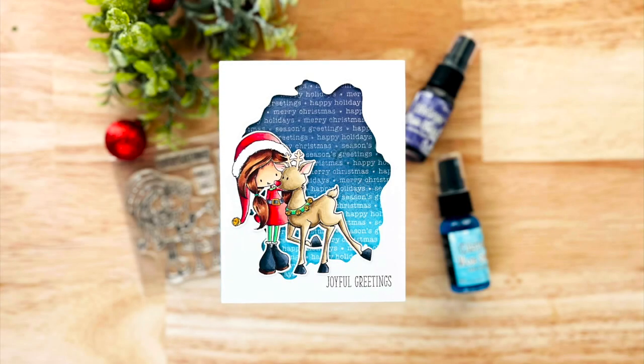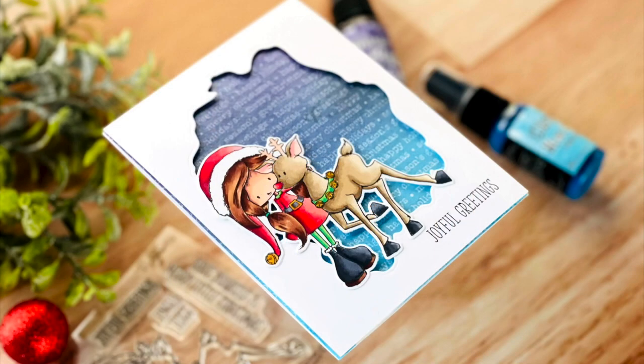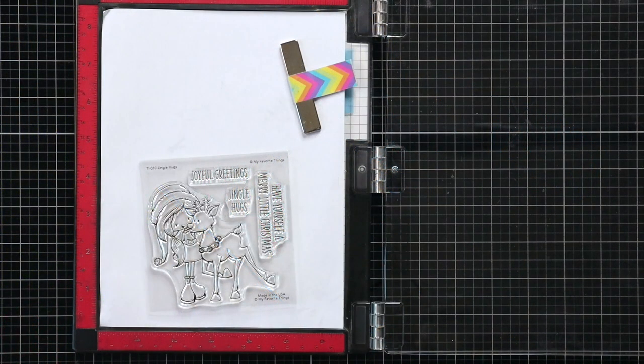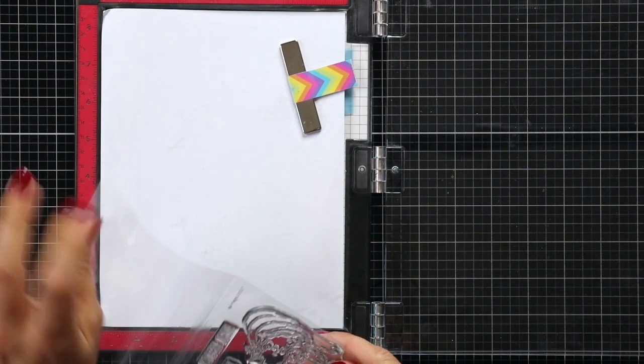Hi everyone, this is Mindy Egan and welcome back to another video for My Favorite Things. Today we're going to be doing a little bit of Copic coloring and creating a background using Distress Mica Spray Stains.